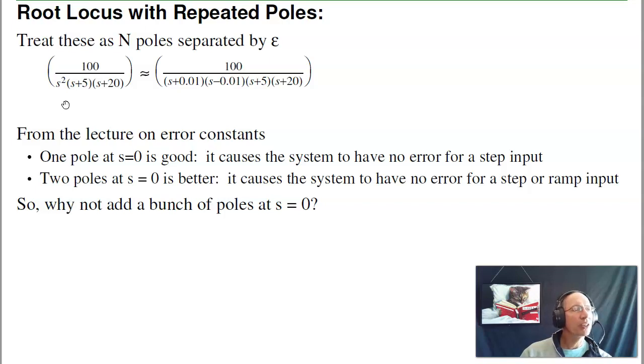From the lecture on error constants, one pole at s=0 is good: it causes the system to have no error for a step input. Two poles at s=0 is better: it causes the system to have no error for a step or ramp input. So, why not add a bunch of poles at s equals 0? Well, if you look at the root locus with repeated poles, you can see why.